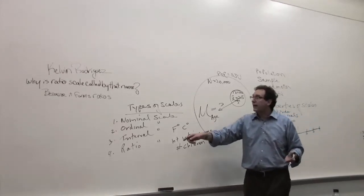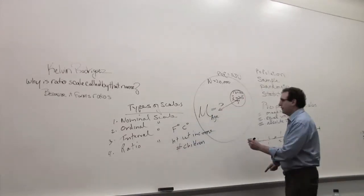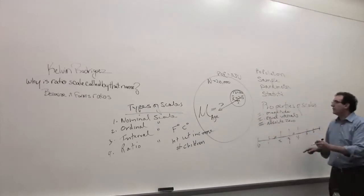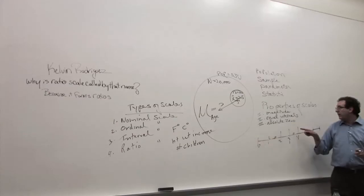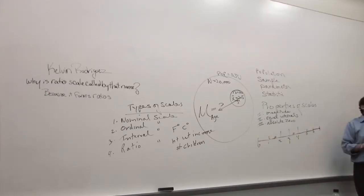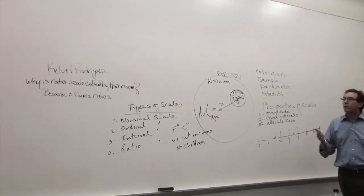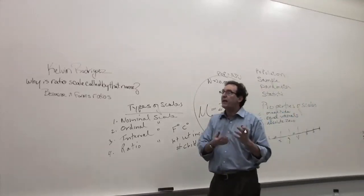You can say twice as big or three times as big or five times as big. So what's the difference? Whenever a scale has all these properties, a ratio scale has all these three properties. In particular it has the absolute zero, which means when you start at zero, it truly means zero. Then six, in fact, is twice as big as three. So again, in summary, why is the ratio scale called by that particular name?